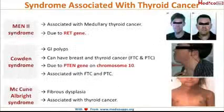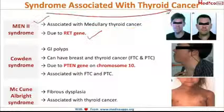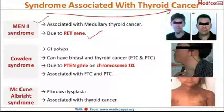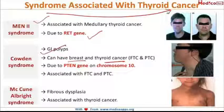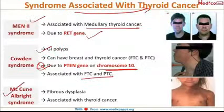The fourth syndrome is MEN2, associated mainly with medullary thyroid cancer, which occurs due to the RET gene. Then comes Cowden syndrome — seen in both breast cancer and thyroid cancer, along with gastrointestinal polyps. It occurs due to the PTEN gene on chromosome 10 and is associated with follicular thyroid cancer and papillary thyroid cancer.